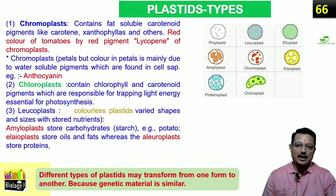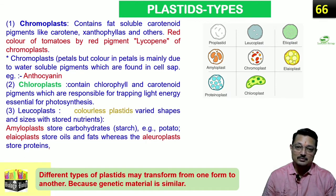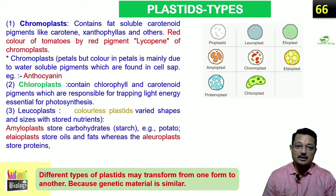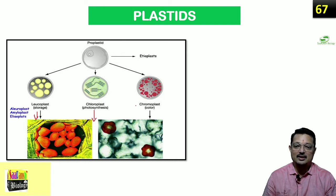Chloroplasts contain chlorophyll and are responsible for trapping light energy, which is essential in photosynthesis. Leucoplasts are the colorless plastids with three types: amyloplasts store carbohydrates like starch — as seen in potatoes, which have a lot of amyloplasts; elaioplasts store oil and fat; and aleuroplasts store protein. These different types of plastids can transform from one form to another because they have similar genetic material, depending on the cell's need.